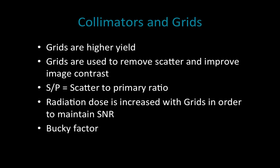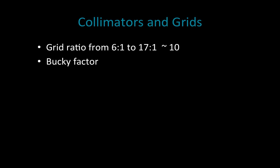Sometimes you can have up to five times more radiation with a large bucky factor. The grid ratio is correlated with the lead strips in your grid — you measure the height over the width of those strips. The smaller the width between strips, the higher the ratio. A very high grid ratio means you're placing many strips in a small area, creating a higher grid factor and tending to create a higher bucky factor.